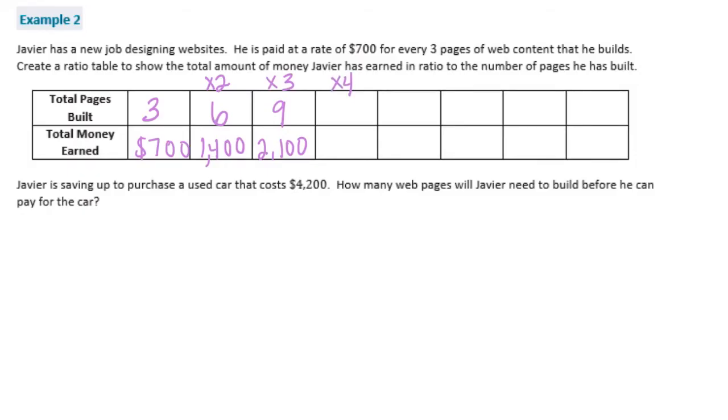We multiply our original ratio by 4, we get 12. And 700 times 4, 7 times 4 is 28. Add on the two zeros, 2,800. Multiply by 5. 3 times 5 is 15 pages built. 700 times 5 would be $3,500. Multiply by 6. 3 times 6 is 18. 7 times 6 is 4,200. Times 7. 3 times 7 is 21. 700 times 7 would be 4,900. And times 8. We get 3 times 8 is 24 pages. And 700 times 8 would be $5,600.